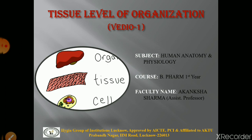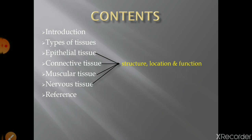Different types of tissues are present in the body in different locations and have their own different functions. The contents included in this lesson are: an introduction to tissue, and then the different types of tissues — the epithelial tissue, connective tissue, muscular tissue, and the nervous tissue. All these tissues have been described in detail with the help of diagrams.